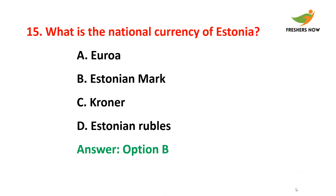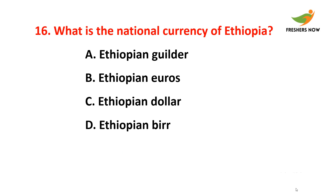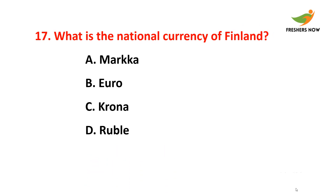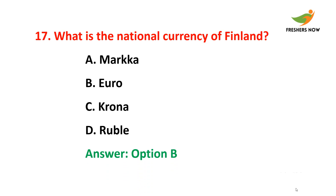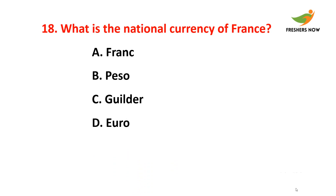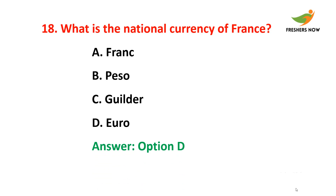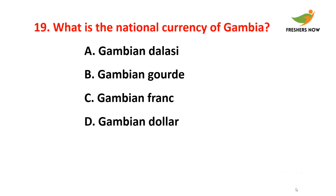Fifteenth question: What is the national currency of Estonia? The answer is option B — Estonian mark. Sixteenth question: What is the national currency of Ethiopia? The answer is option D — Ethiopian birr. Seventeenth question: What is the national currency of Finland? The answer is option B — euro.